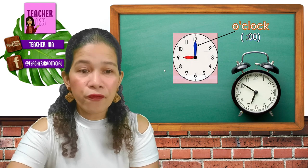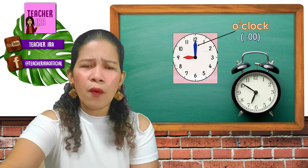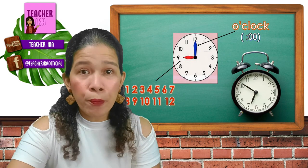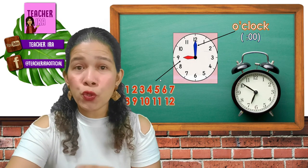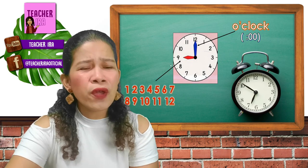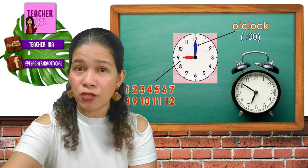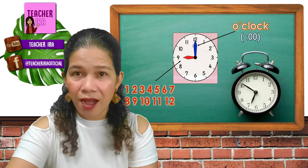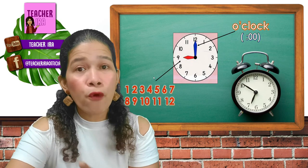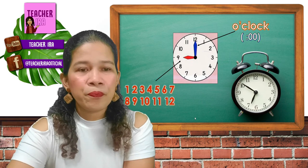The minute numbers read by 5s: 5, 10, 15, 20, 25, 30, 35, 40, 45, 50, 55, and 60 — but 60 you call o'clock. Now the short hand, being the hour hand, tells the number itself. You will read the number where it is pointed: 1, 2, 3, 4, 5, 6, 7, 8, 9, 10, 11, and 12. You will read the short hand first before the long hand that says o'clock. For example, you will say 9 o'clock.